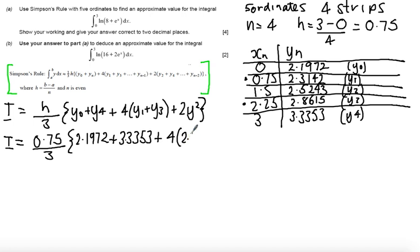Plus 4 lots of my odd terms, so I get 2.3142 plus 2.8615, finally plus 2 lots of my even term that hasn't already been used, so 2.5243, close my small bracket, then close my big curly bracket.